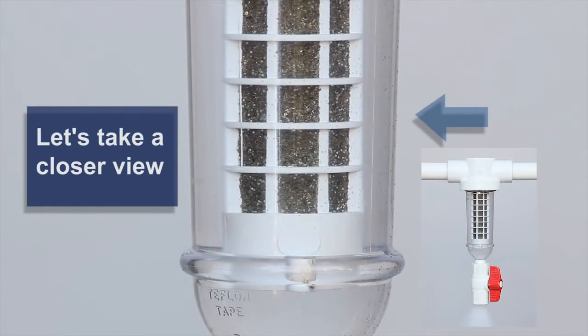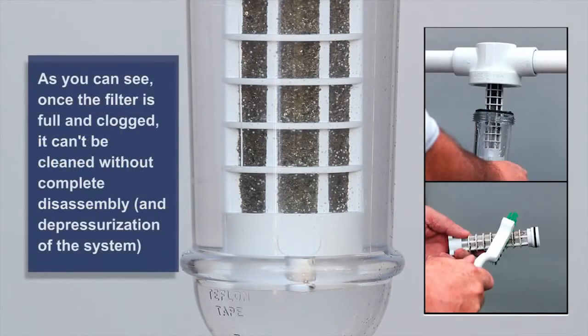There is only one way to clean a clogged spin-down filter, and that's to turn off the water supply, depressurize the system, take the unit apart, and clean the filter manually with a brush.